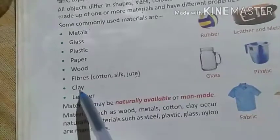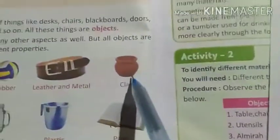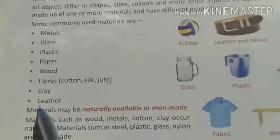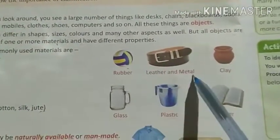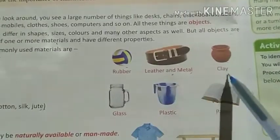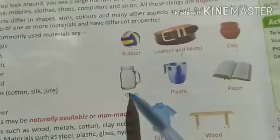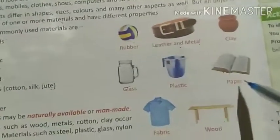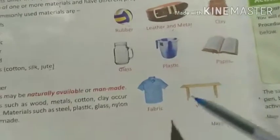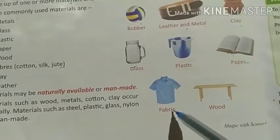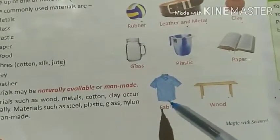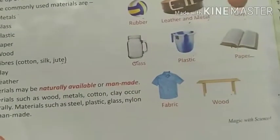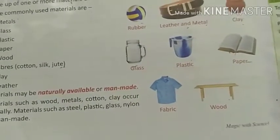Then clay — mitti ke hote hain, clay means mitti. This is a clay. Then leather. Yahan pe diya hai — yeh rubber hai, yeh metal aur leather ka hai, yeh clay, yeh glass ka hai, plastics, papers — hamare books. Then fiber, fabrics — this is made up of cotton, silk — means plant fiber, animal fiber, or man-made fiber. Then this is a wood table, chair.